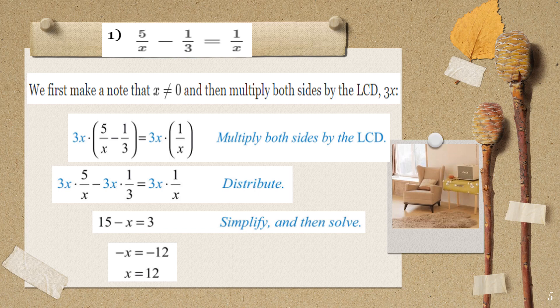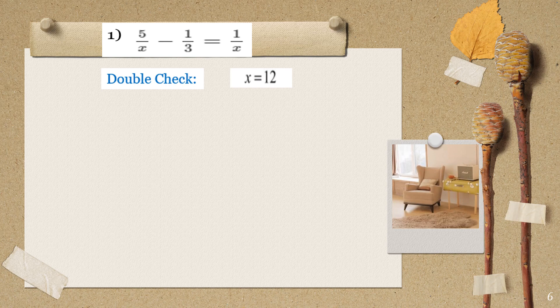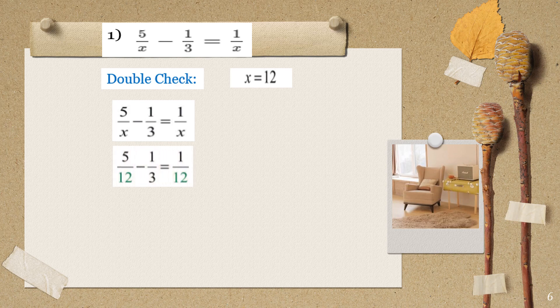Whenever we are asked to solve for the equation, that means we are asked to find the value of the variable that will make the equation true. Since we have a rational equation, we will double-check if x equals 12 is correct by substituting it back into the original equation.